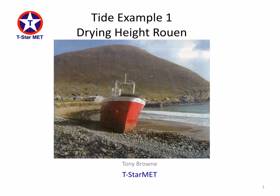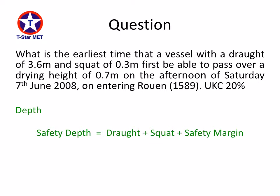Hello, my name is Tony Brown and I'm going to look at a drying height question for a tidal calculation using Rouen as a secondary port. The question is: what is the earliest time that a vessel with a draft of 3.6 metres and a squat of 0.3 metres will first be able to pass over a drying height of 0.7 metres on the afternoon of Saturday the 7th of August 2008 on entering Rouen, which is Admiralty timetable number 1589, and requires an underkeel clearance of 20%.